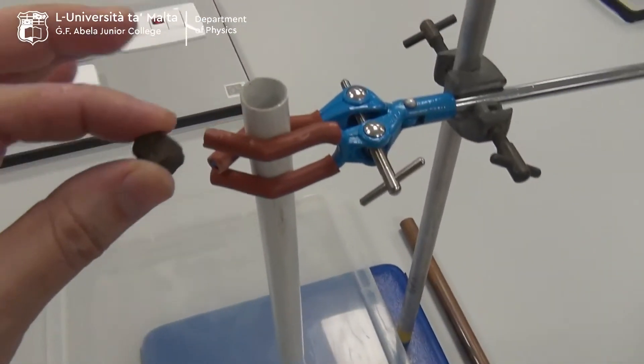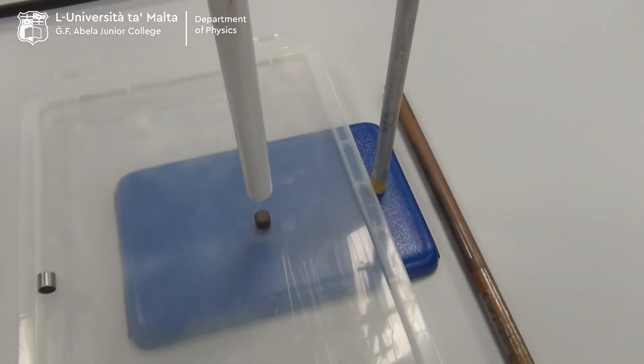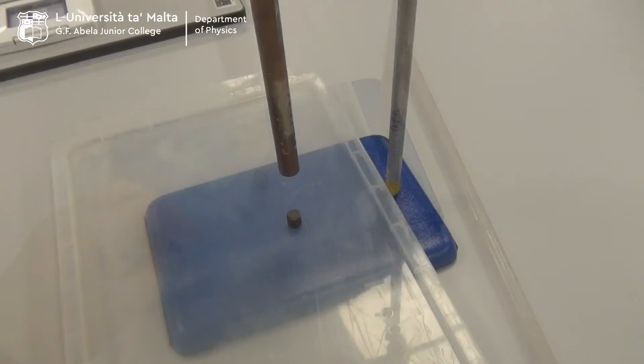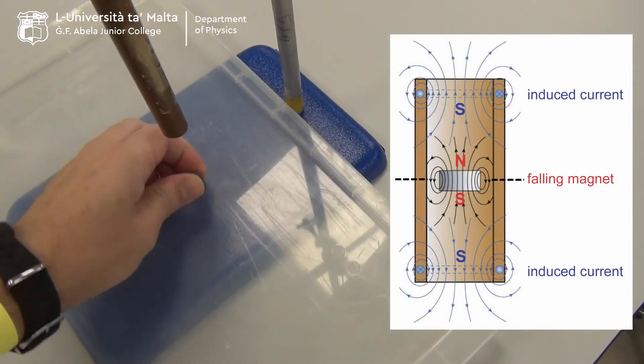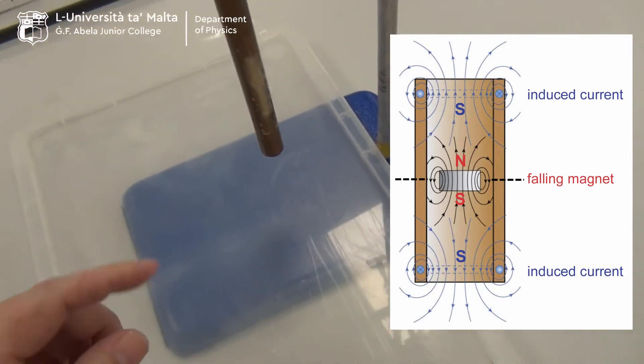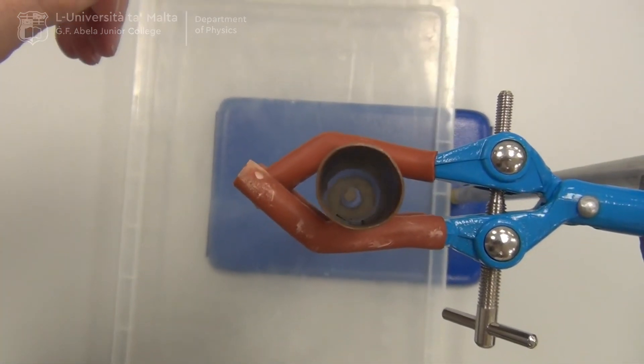The magnet is dropped through the tube and it falls also very quickly. So this illustrates that as the magnet moves through the copper tube, it creates an electric current inside the tube which opposes the fall of the magnet.